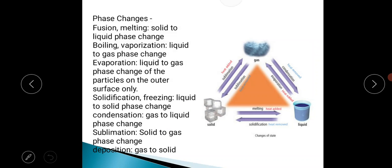Phase changes: Fusion or melting is solid to liquid phase change. Boiling or vaporization is liquid to gas phase change. Evaporation is liquid to gas phase change of the particles on the outer surface only. Solidification or freezing is liquid to solid phase change. Condensation is gas to liquid phase change. Sublimation is solid to gas phase change. Deposition is gas to solid. These are the various phase changes.